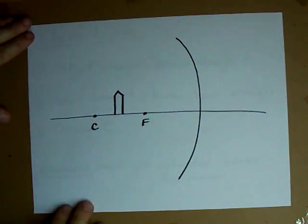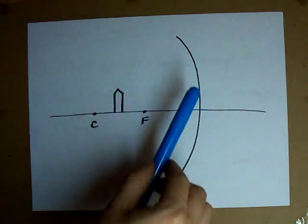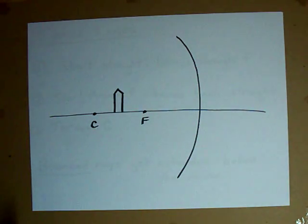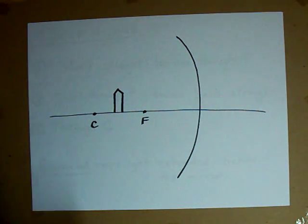How can you predict the shape or placement of an image in a concave mirror? There are three different diagrams you're going to have to be able to draw on tests.